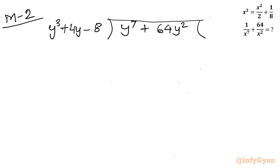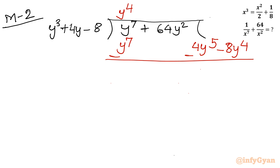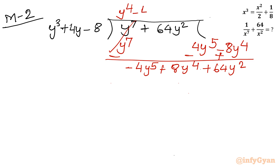Starting the long division: y⁷ ÷ (y³ + 4y − 8). First quotient term is y⁴. Multiplying: y⁴·(y³ + 4y − 8) = y⁷ + 4y⁵ − 8y⁴. Subtracting gives −4y⁵ + 8y⁴ + 64y². Next quotient term is −4y², giving −4y⁵ − 16y³ + 32y². After sign change and cancellation, we're left with 8y⁴ + 16y³ + 32y².